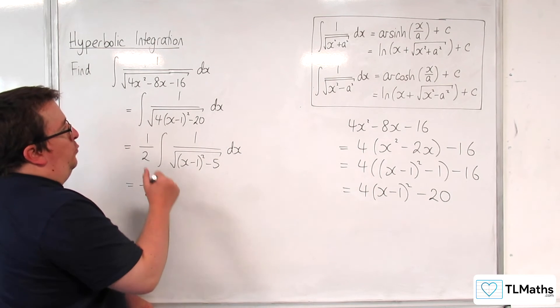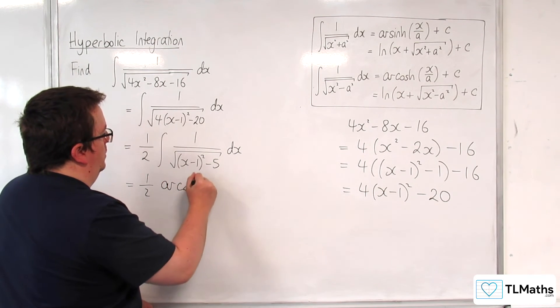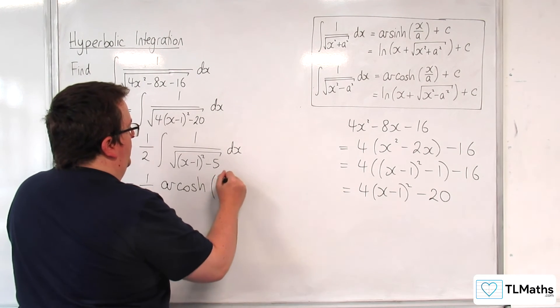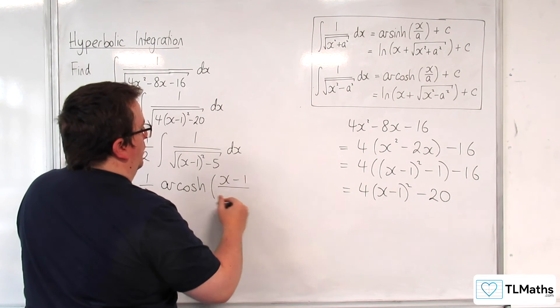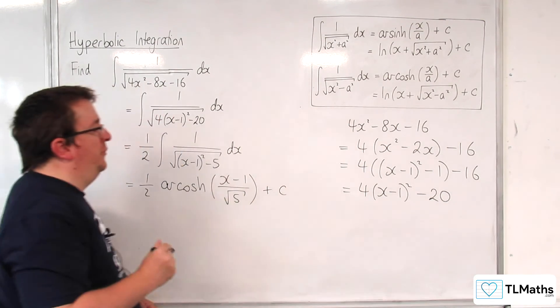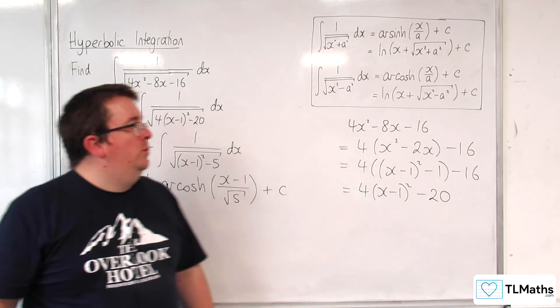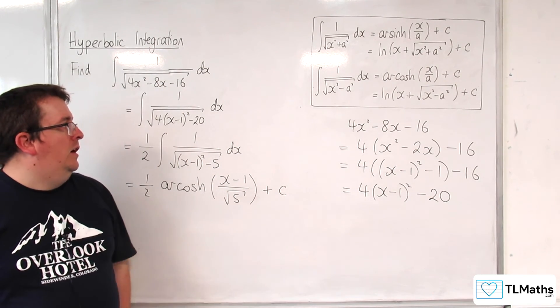So, we can write that as 1 half times arcosh of x take away 1 over the square root of 5 plus some constant c. Now, we could write it in the logarithmic form if we wanted to, but that's our answer.